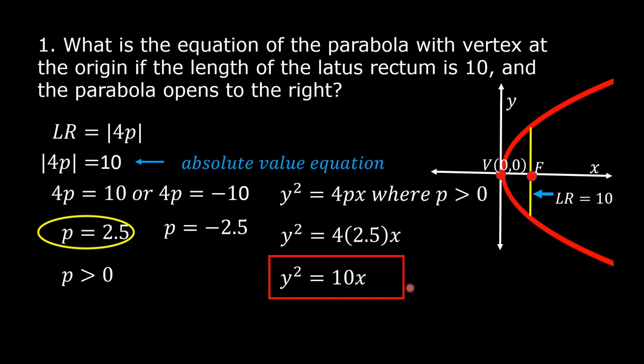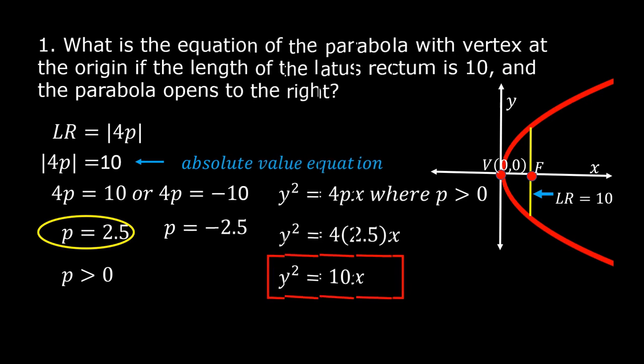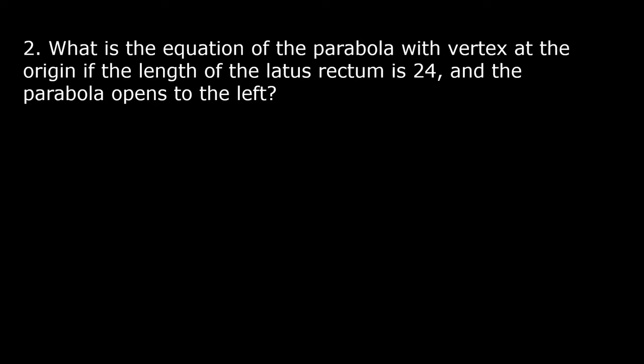This is the equation of the parabola with vertex at the origin if the length of the Latus Rectum is 10 and the parabola opens to the right. Example number 2: What is the equation of the parabola with vertex at the origin if the length of the Latus Rectum is 24 and the parabola opens to the left?